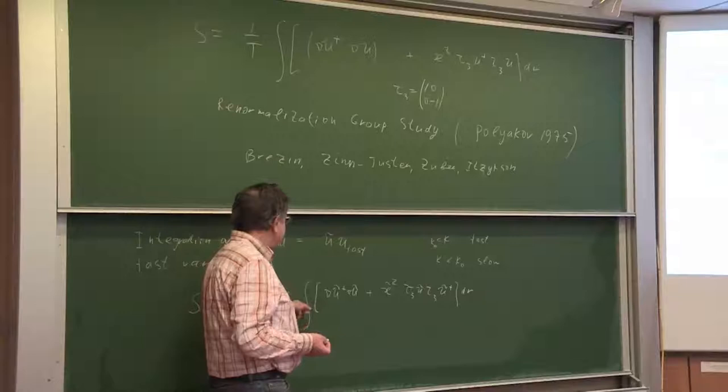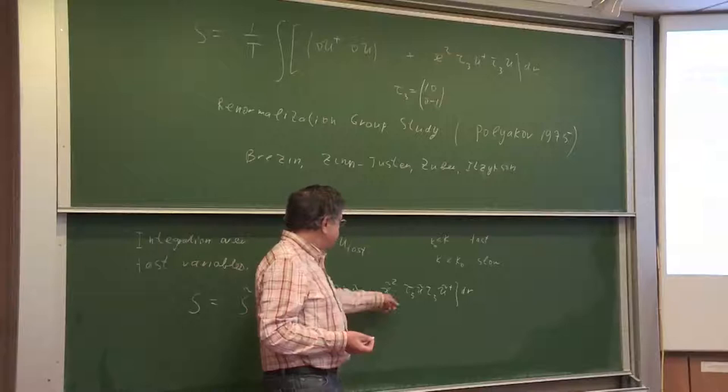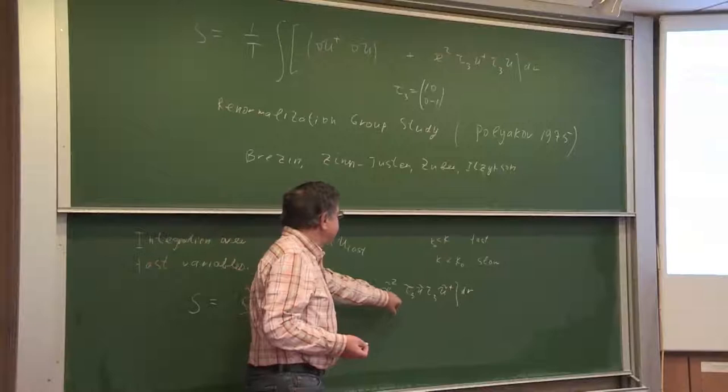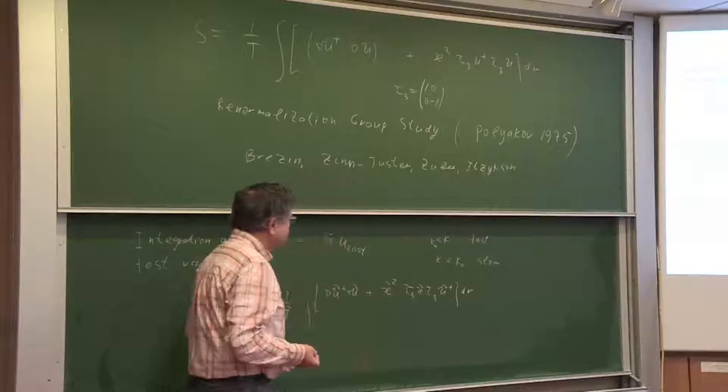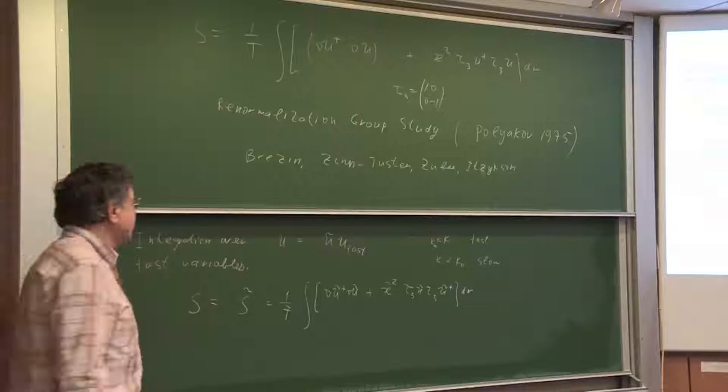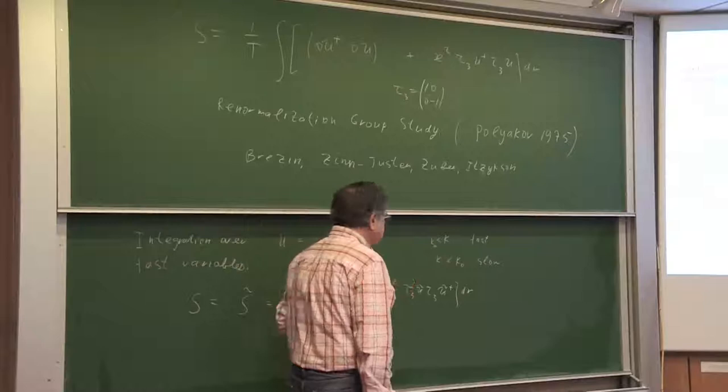The renormalization group equations for temperature are written in many books, but the equation for the anisotropy parameter I didn't find in the literature—though I don't believe we were the first to discover it. To find things each time is very difficult because an enormous amount of literature exists. Very often it is faster to calculate yourself.